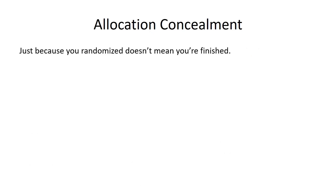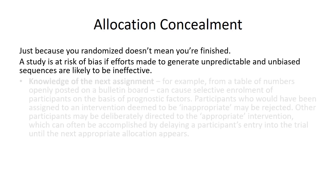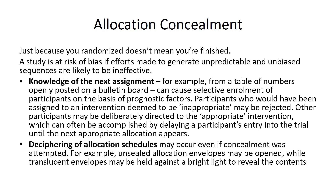In terms of allocation concealment, just because you randomized doesn't mean you're finished. A study is at risk of bias if efforts made to generate unpredictable and unbiased sequences are likely to be ineffective — for instance, a table of numbers posted on a bulletin board. You want the people assigning to groups to have absolutely no idea where the next person is going to go. Some people can decipher allocation schedules even if concealment is attempted. For instance, if the allocation envelopes are unsealed or they're translucent, they can be held up against a bright light to reveal the contents.